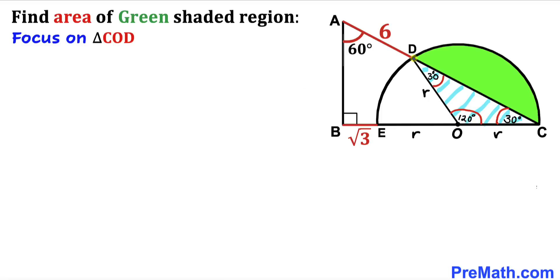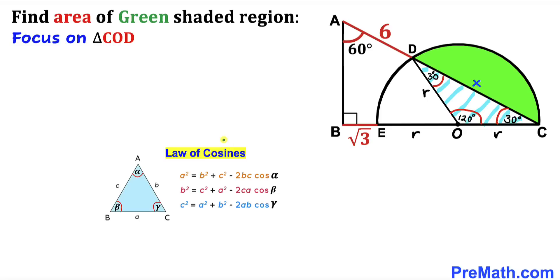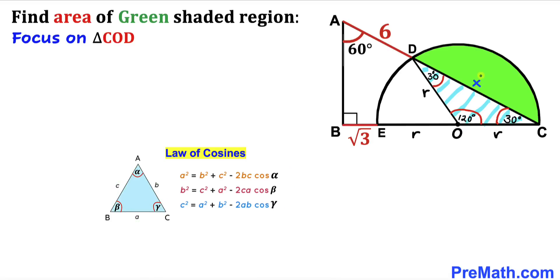Now let's focus on chord CD. I'm going to label chord CD as X units, and now we are going to solve for X. Let's recall the law of cosines for triangle COD. Our side length is X and the opposite angle is 120 degrees.